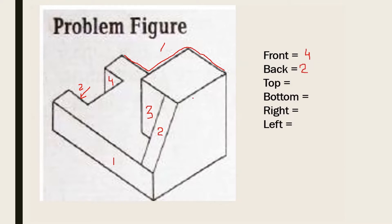Top surfaces: one, two. So two top surfaces. Then the bottom — if you look from the bottom, there is only a single surface. So the bottom surface is one.